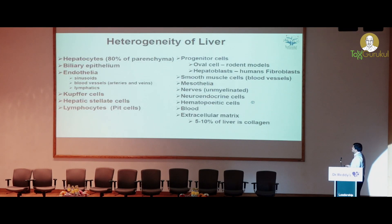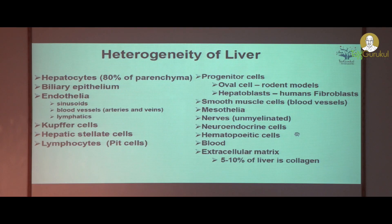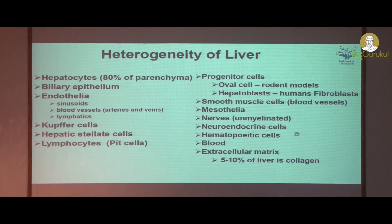This slide shows the different cells found in the liver: hepatocytes, biliary epithelium, endothelium, sinusoids, lymphatics, Kupffer cells, hepatic stellate cells, and progenitor cells. These oval cells are the stem cells seen in rodents, equivalent to hepatoblasts in humans. We also have smooth muscle cells, mesothelium, nerves, hematopoietic cells, blood, and extracellular matrix which may account for 5 to 10 percent of the collagen.